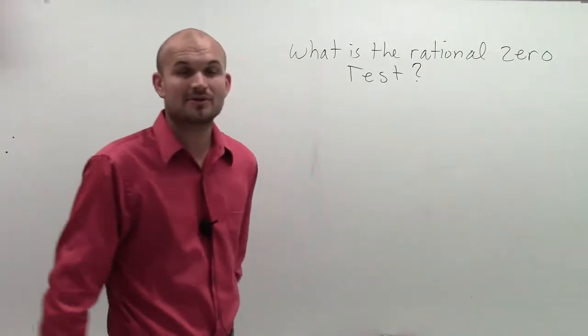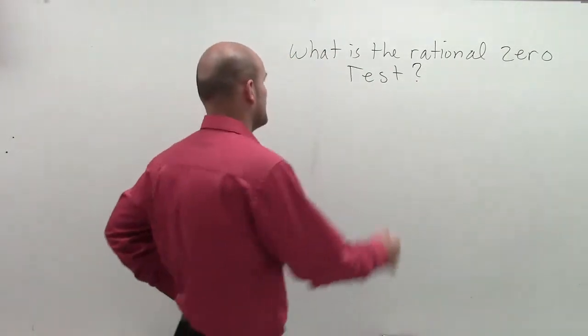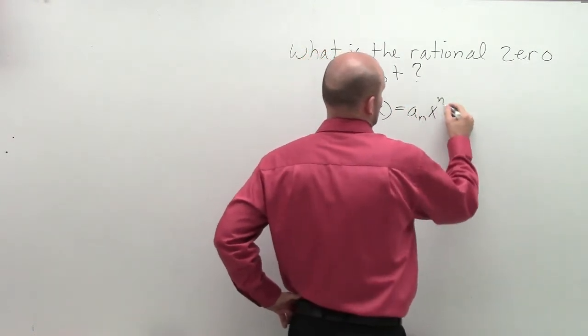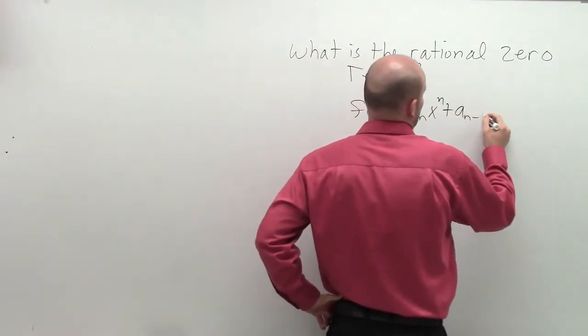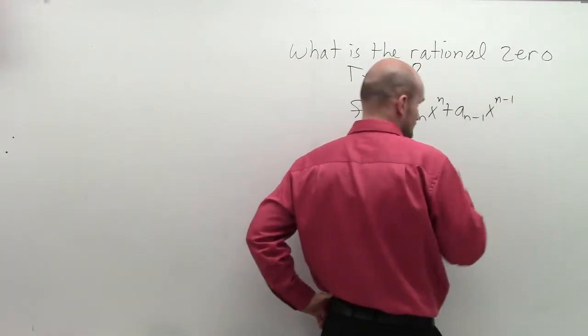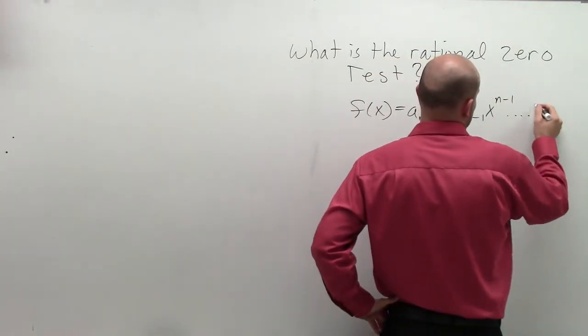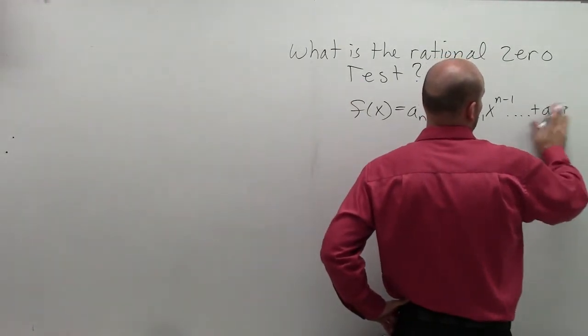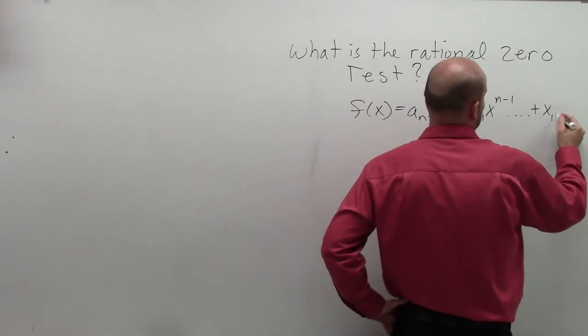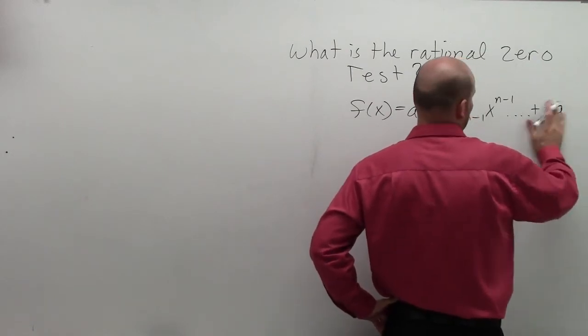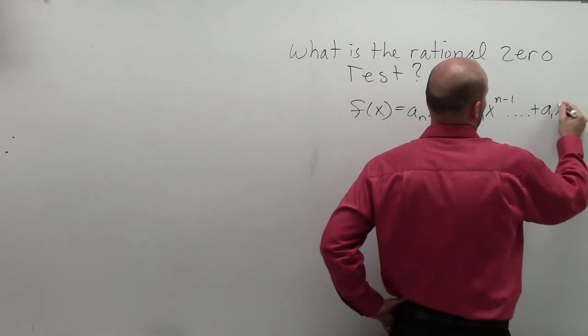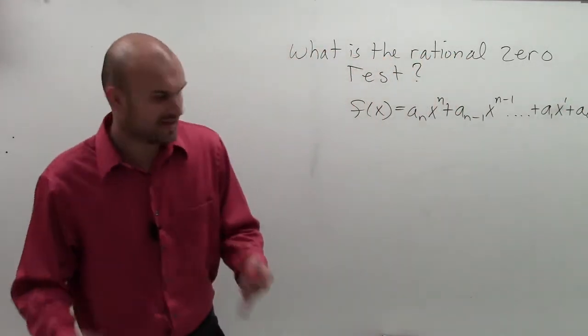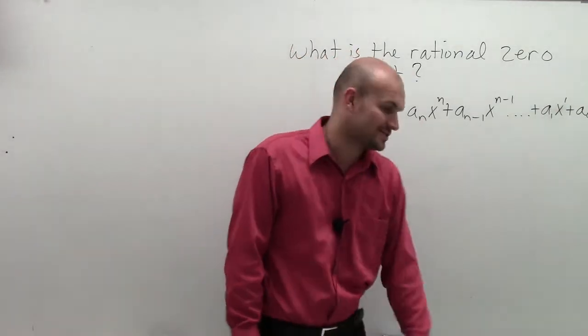So first of all, let's go back with our definition of a polynomial. The definition of our polynomial equals a_n x^n plus a_(n-1) x^(n-1) dot dot dot plus a_1 x^1 plus a_0. So there's the definition. Remember, this can be infinitely many terms.